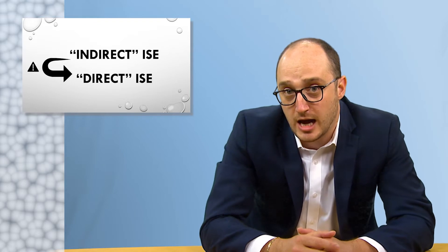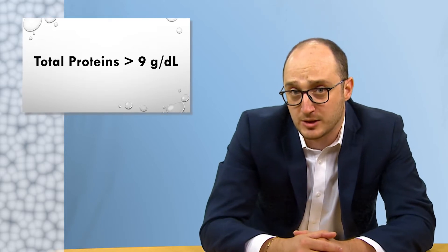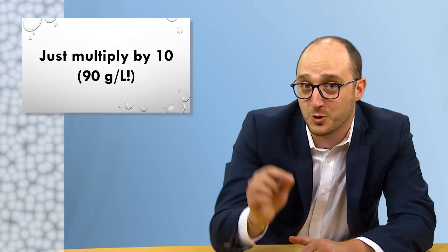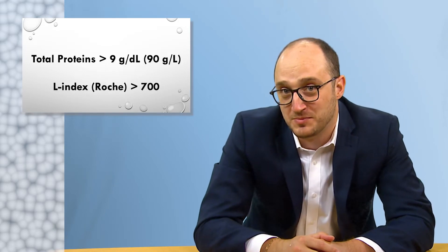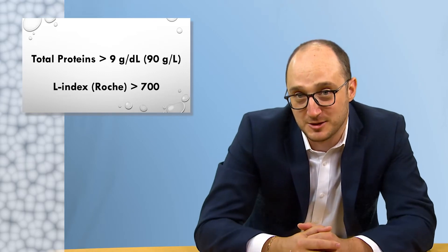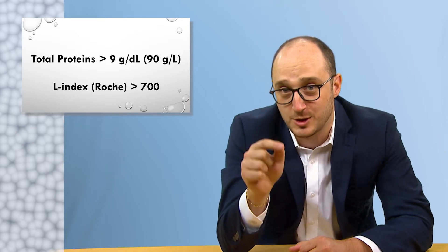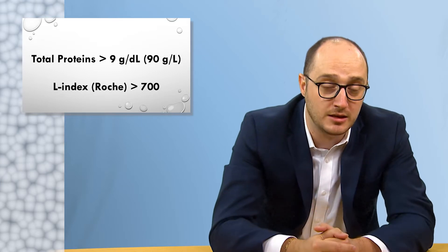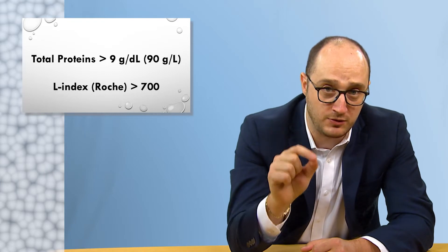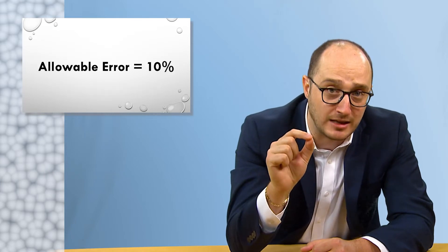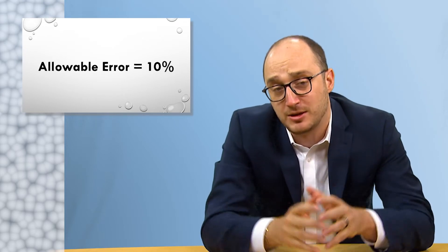For instance, I would build a rule that holds all indirect sodium results with total proteins greater than 9 grams per deciliter — which is equal to something in SI units — or those with a lipemia index greater than 700. This last one applies to Roche users only. And if both of these numbers sound too low to you, it's because the thresholds in current product inserts and some publications are misleading. Please pay attention when referring to product inserts and published literature on this subject. Most manufacturers set an allowable error of 10% for their interference studies, which is highly inappropriate for plasma sodium.